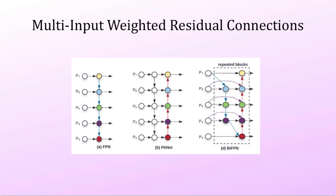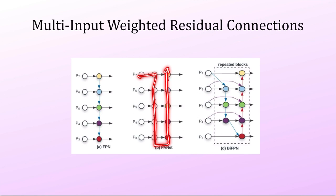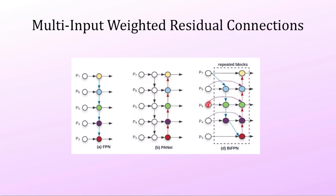We all know how FPN works — the backbone traverses from first to last layer, then you aggregate features going top to bottom. Path aggregation network added a second pass, bottom to top, for two-directional feature aggregation. EfficientDet's bi-directional FPN further adds direct shortcut connections — residual connections — between non-adjacent nodes in the network.